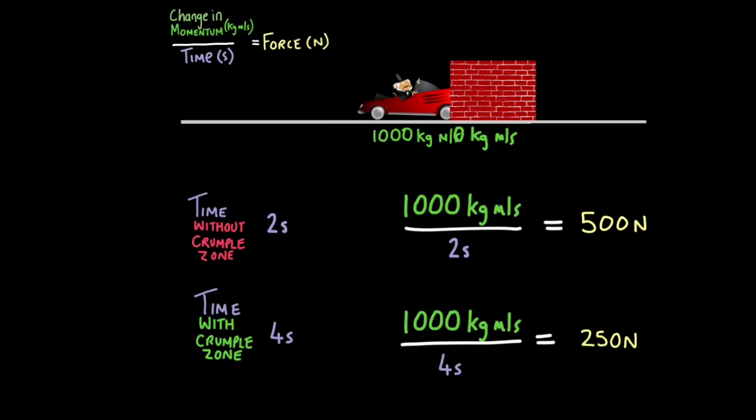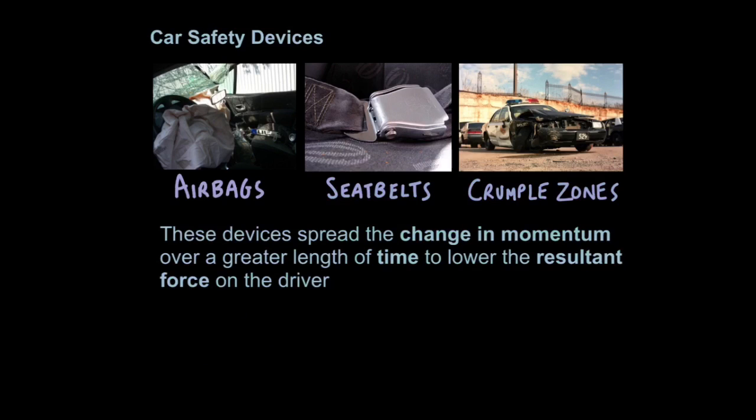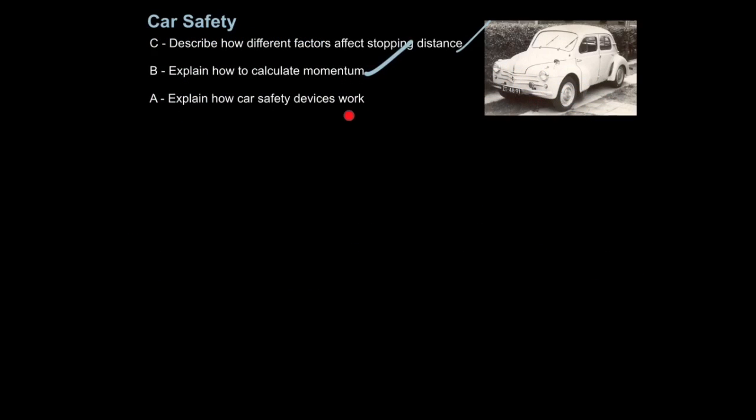So this is what all car safety devices do, they increase the time over which the momentum change occurs lowering the resultant force. So back to our definition, these devices spread the change in momentum over a greater length of time to lower the resultant force on the driver. You may be expected to recall this definition in an exam as well as prove it mathematically. And that's how you explain how car safety devices work.